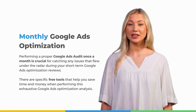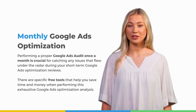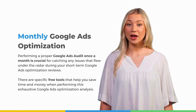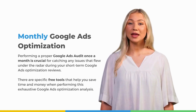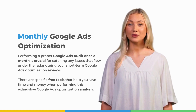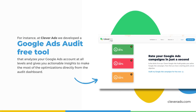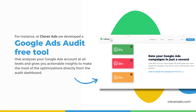Monthly Google Ads Optimization: Performing a proper Google Ads audit once a month is crucial for catching any issues that flew under the radar during your short-term reviews. There are specific free tools that help you save time and money when performing this exhaustive analysis. At Clever Ads, we developed a free Google Ads audit tool that analyzes your account at all levels and gives you actionable insights to make the most of the optimizations directly from the audit dashboard.